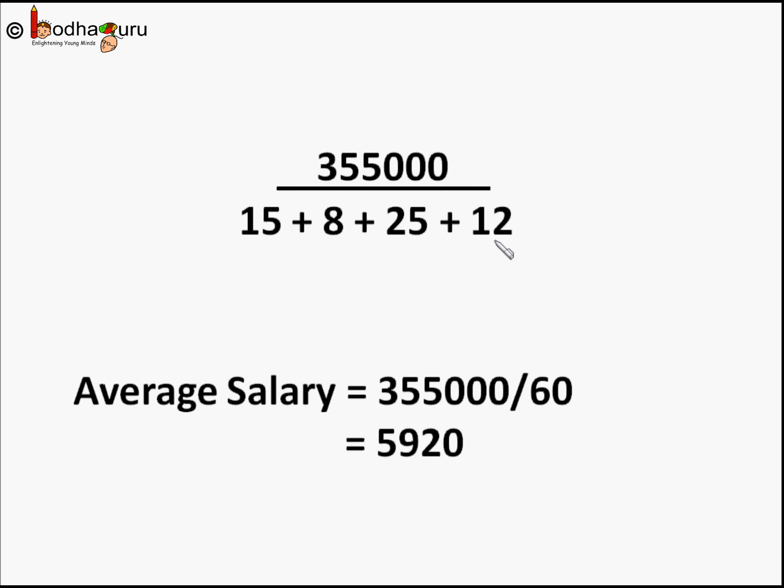And we divide it with number of observations, that is how many people were asked. That number is not 4, it is 15 plus 8 plus 25 plus 12, so that is equal to 60 people. So the mean is 355000 divided by 60, that is equal to approximately Rs. 5920.